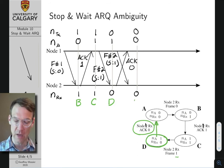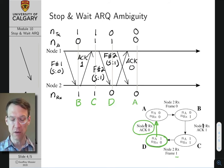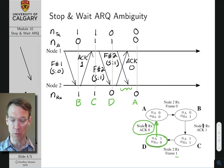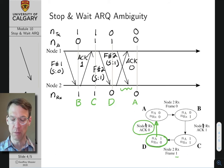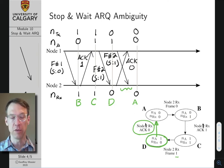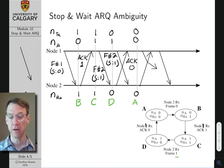Notice that the retransmission of frame number two with sequence number one didn't really affect our state machine at all. The transition from D back to A is contingent only on receiving that acknowledgement. The fact that a frame has been retransmitted or received more than once doesn't influence the transition. So now we're back in state A.